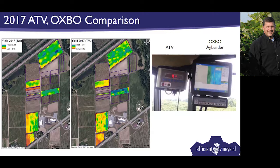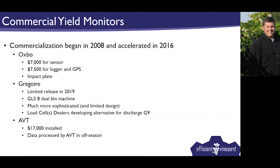On the Oxbow map, at the edge effect where it enters and exits a row, you pick up some lower numbers that may actually be real. Bottom line: both yield monitors work, with some advantages and disadvantages to each. As a practitioner, I really like that the Oxbow hooks up to the Ag Leader system and shows real-time data. If ATV data could be streamed into SMS software on the fly you'd get the same thing, but both systems — whether a weigh frame or impact plate — perform well.